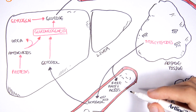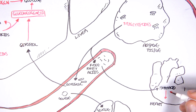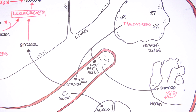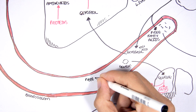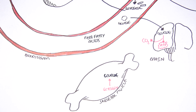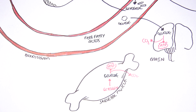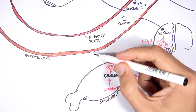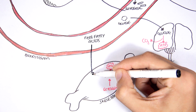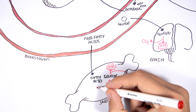The fatty acids can be utilized by the heart, because the heart's main source of energy comes from fatty acids. Skeletal muscle has its own glycogen stores and during the fasted state it can break these down to form glucose units, providing the muscle with the energy it needs. Eventually those stores are depleted, and skeletal muscle then begins using free fatty acids from adipose tissue as a source of energy.